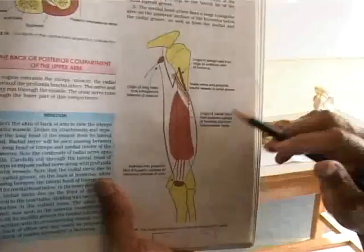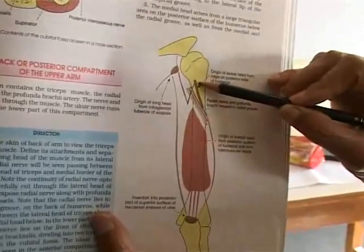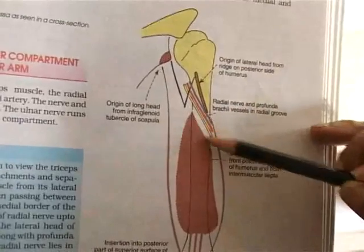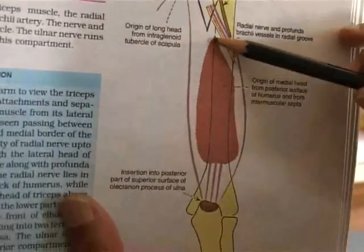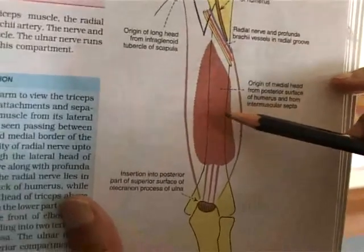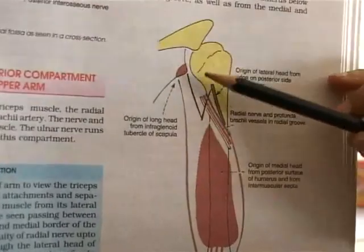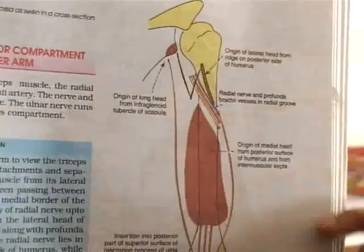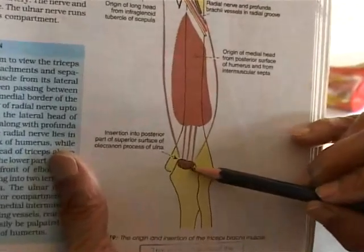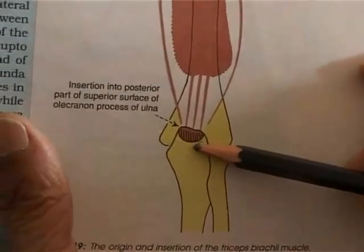Flexor digitorum profundus arises from the medial surface of the ulna. On the lateral surface of the olecranon process is the origin of the weak anconeus. The most important muscle on the superior surface of the olecranon process of the ulna is triceps brachii. The posterior surface of the humerus shows the origin of the lateral head of triceps brachii from a small area; most of the posterior surface gives attachment to the large medial head of triceps brachii; the long head arises from the infraglenoid tubercle. All three heads join together and are inserted into the olecranon process of the ulna — the important extensor of the elbow joint.